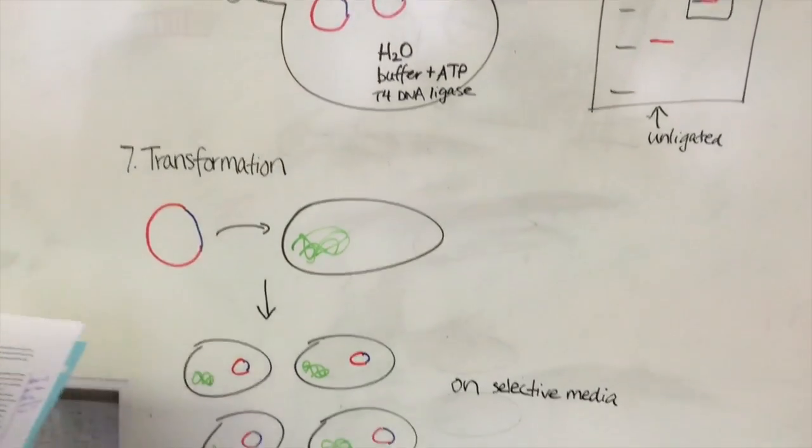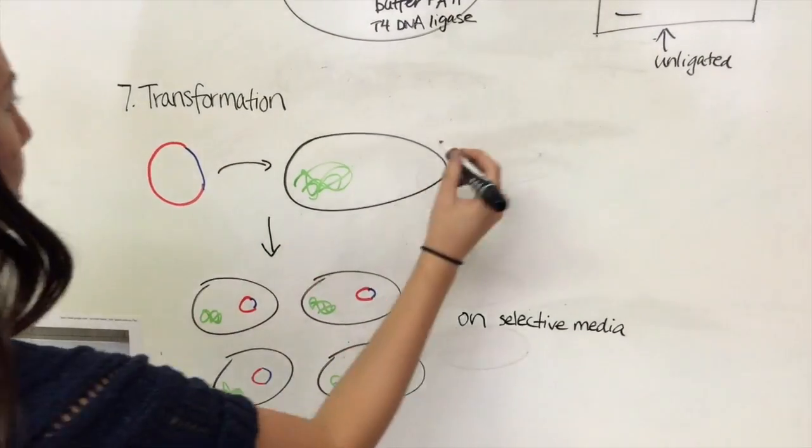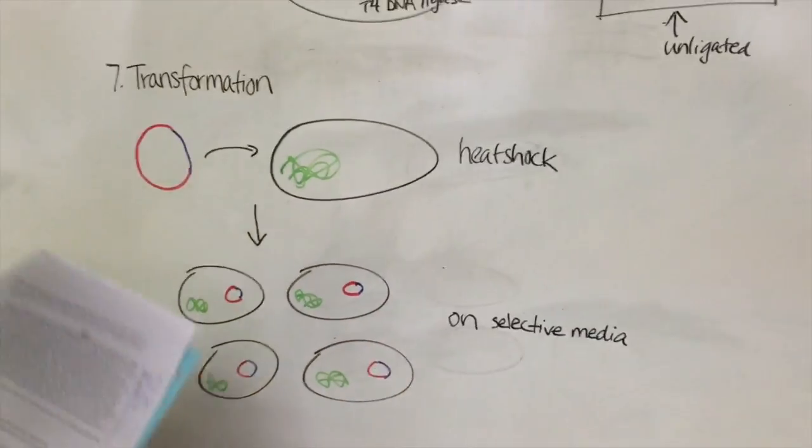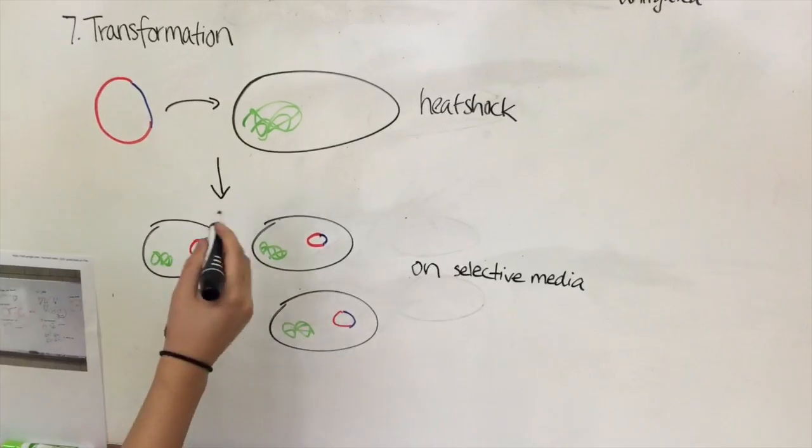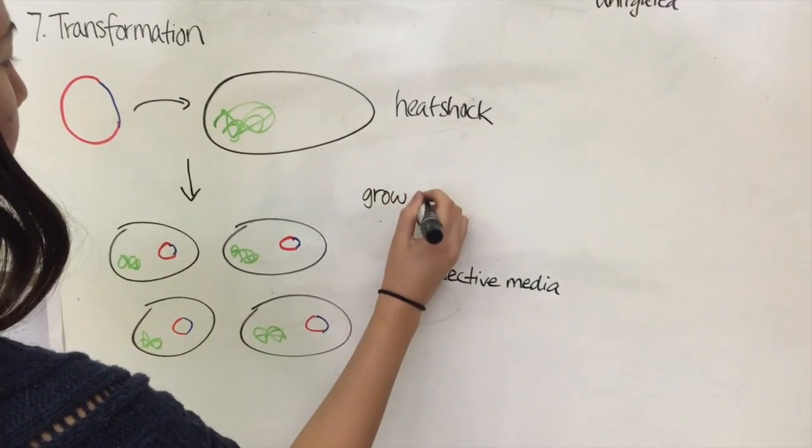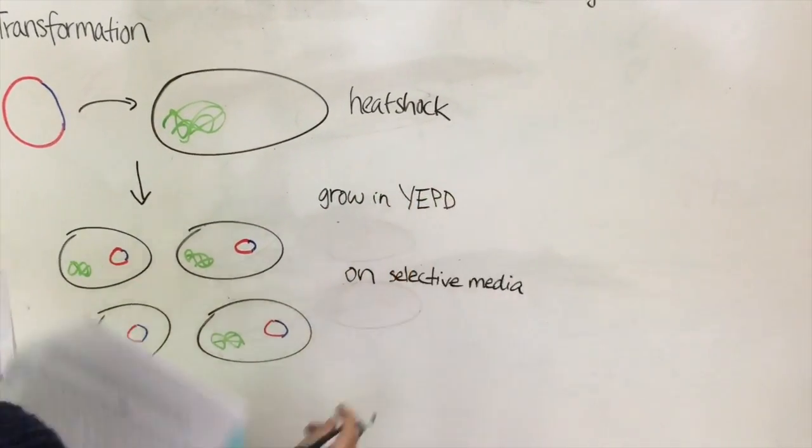If the ligated product is seen as longer on the gel than the unligated plasmid, continue on to transformation by heat-shocking the lice-5 mutants. Finally, grow the yeast on the YEPD and then spread onto the COM-lice plates for selection of the transformants.